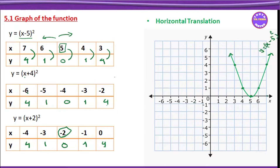Now let us go to minus 6, 4. So minus 6 is the x-coordinate. Then minus 5, 1 — minus 5 is the x-value, 1 is the y-value. Then minus 4, 0 — minus 4 is the x-value, 0 is the y-value. Minus 3, 1 — minus 3 with y-value 1. Minus 2, 4 — minus 2 with y-value 4.